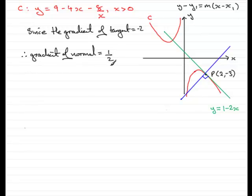Now we've got the gradient of the normal. We've got the coordinates x1, y1. So we're in a position to find the equation of the normal through P. Don't just do it. Always give a subtitle. So we can say therefore equation of the normal at P is: